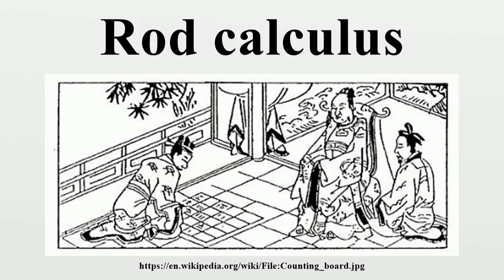Liu Hui used many calculations with fractions in the Sea Island Mathematical Manual. This form of fraction — with numerator on top and denominator at bottom without a horizontal bar — was transmitted to Arabic countries in Al-Khwarizmi's 825 AD book via India, and was in use by tenth-century Abu'l-Hassan al-Uqlidisi and fifteenth-century Jamshid al-Kashi's work, Arithmetic Key.